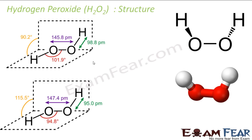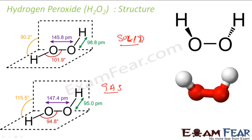Let's see the structure of these. So this structure is for the gas phase and this one is for the solid phase. Hydrogen peroxide has two different structures in solid and gas phase.